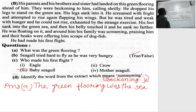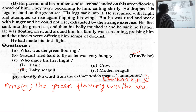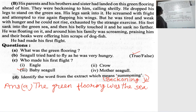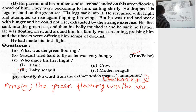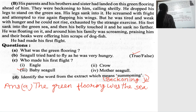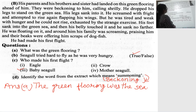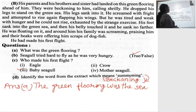Now let's see extract D. His parents and his brothers and sister had landed on this green flooring ahead of him. They were beckoning to him, calling shrilly. He dropped his legs to stand on the green sea. His legs sank into it. He screamed with fright and attempted to rise again, flapping his wings. But he was tired and weak with hunger and he couldn't rise — he was exhausted by the strange exercise. His feet sank into the green sea and then his belly touched it and he sank no further. He was floating on it and around him his family was screaming, praising him, and their beaks were offering him scraps of dogfish.